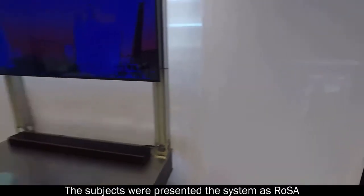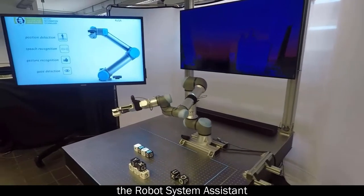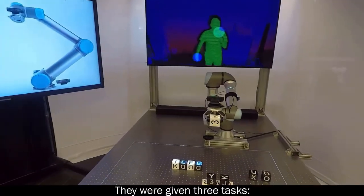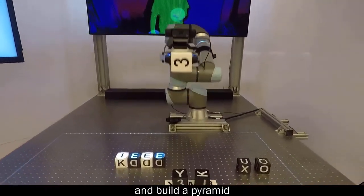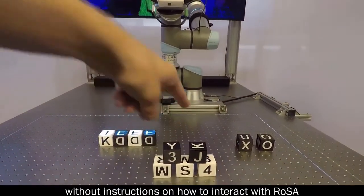The subjects were presented to the system as ROSA, the robot system assistant. They were given three tasks: have ROSA give you a block, spell a specific word, and build a pyramid without the instructions on how to interact with ROSA.